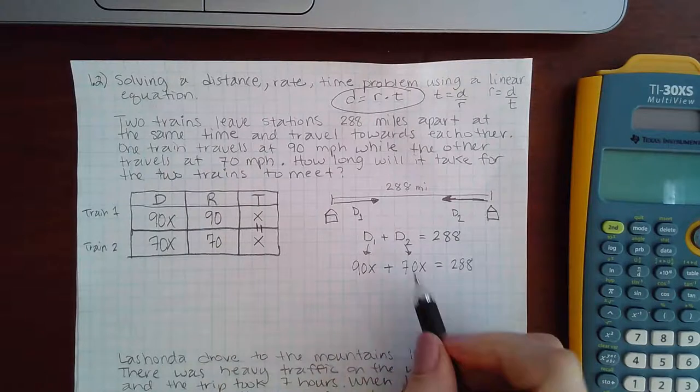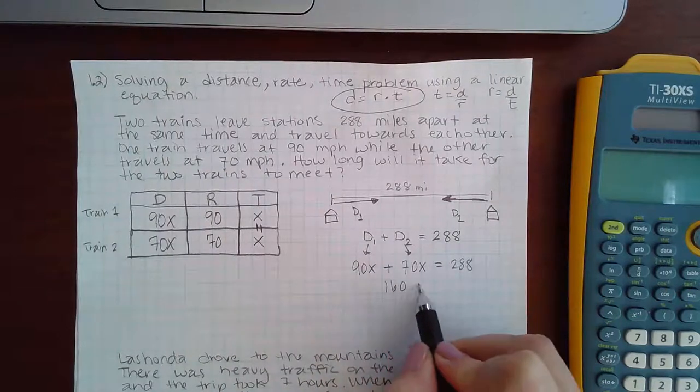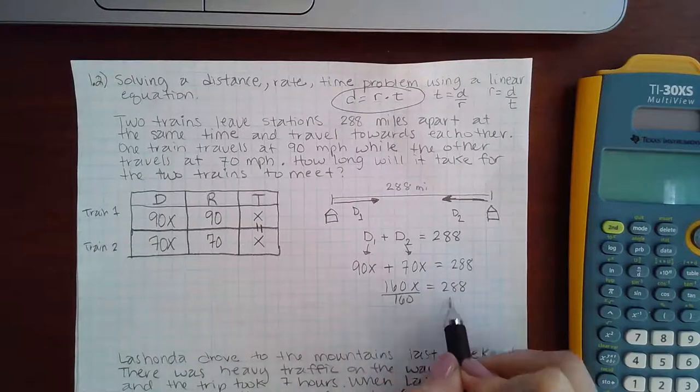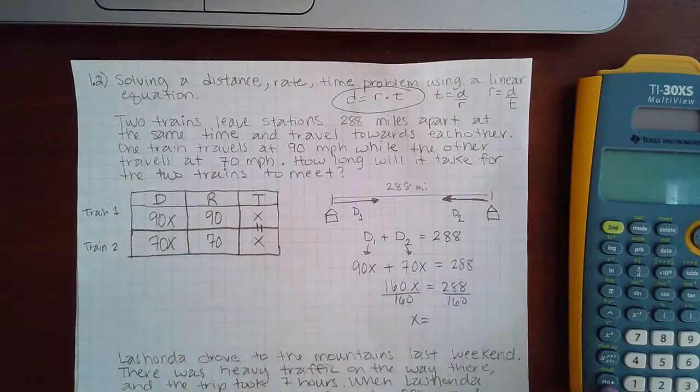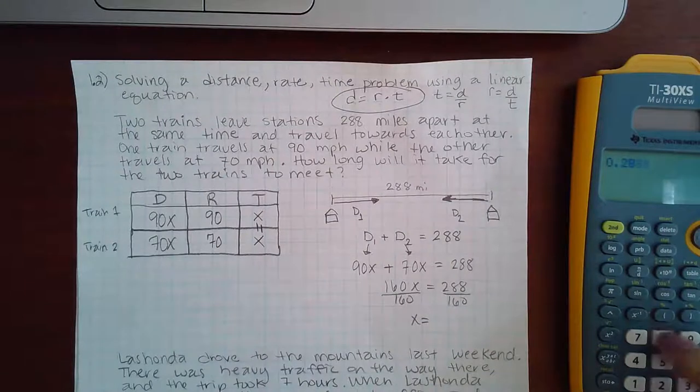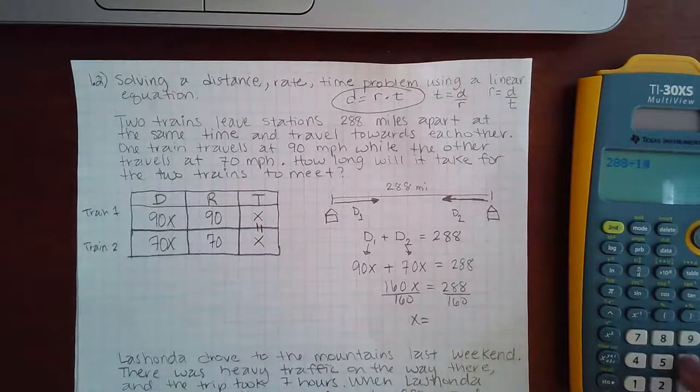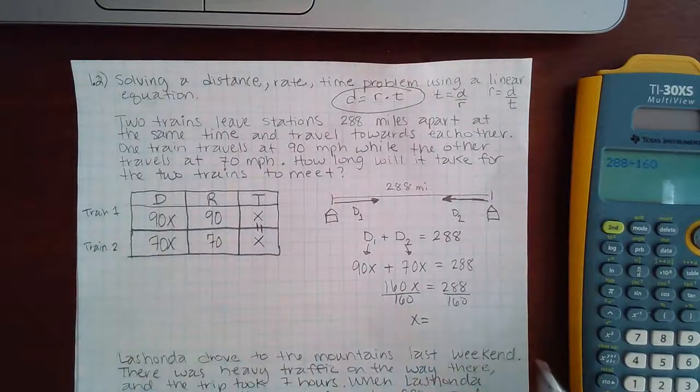And then if I combine my like terms, I get 160X. And if I divide by 160 on both sides, I get 1.8.